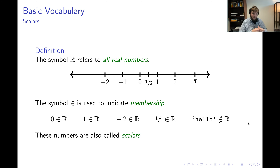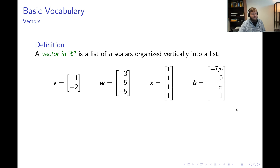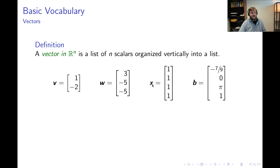The scalar is the building block upon which we build other mathematical objects. The next such object is the notion of a vector. In this course, a vector in ℝⁿ is simply a list of N scalars organized vertically. Here are four examples: bold v is a vertical list of two scalars (1 and −2); bold w organizes three scalars (3, −5, −5); bold x organizes four ones; and bold v organizes −7, 9, 0, π, and 1.